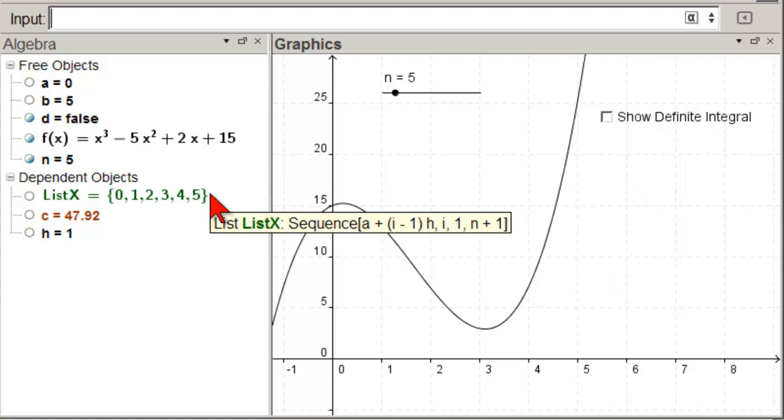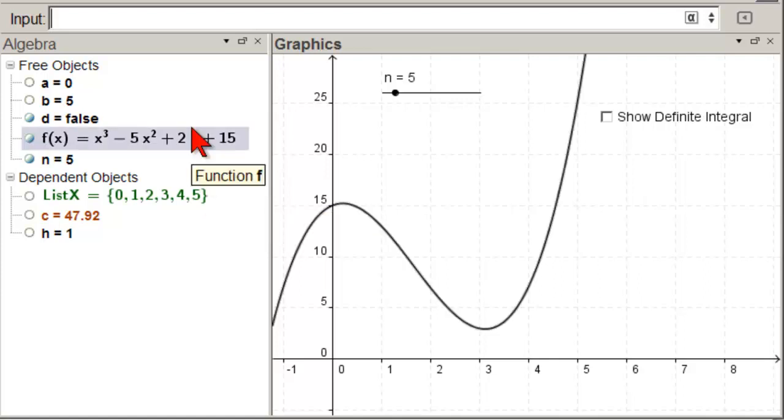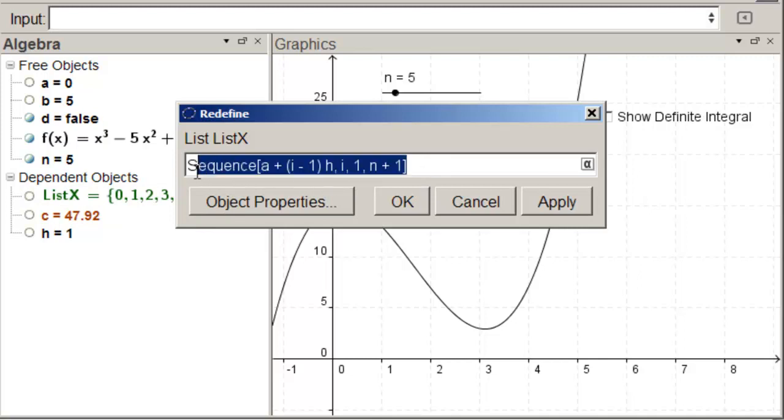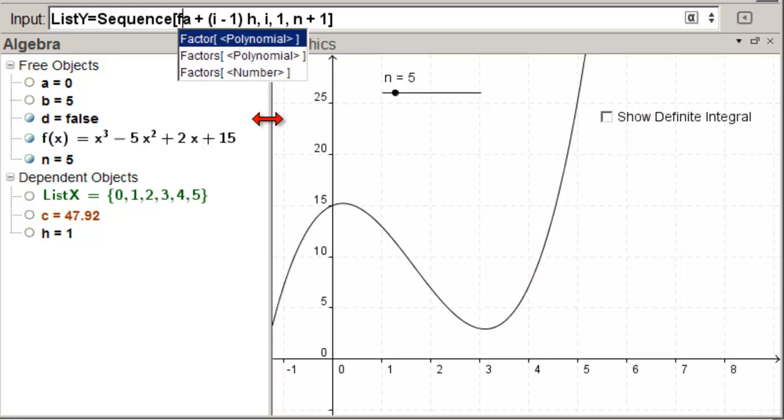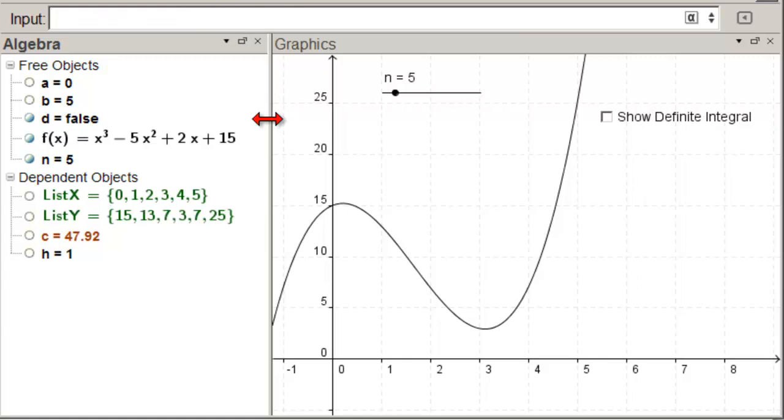Now we need to basically do the same thing, but with Y. So, let's look at this for a minute. Let's copy it. Let's make our list of Ys. List Y equals, and we'll paste that, what we have there. And now instead of just A plus this, we need the function at that value. So, we're going to put an F in front of it, and a parenthesis, and a parenthesis, and that should give us the function values at those points. And sure enough, it does.